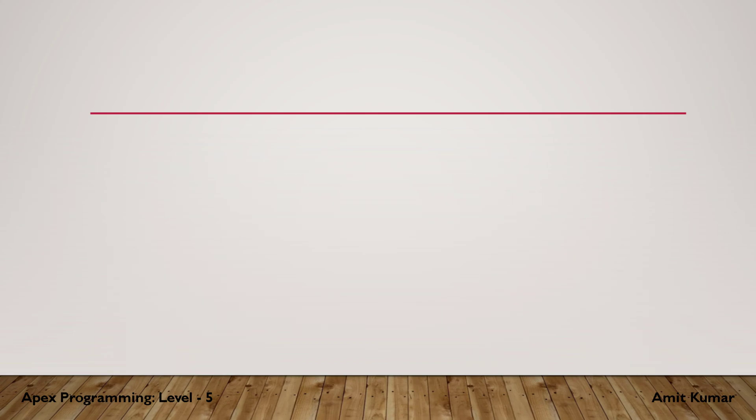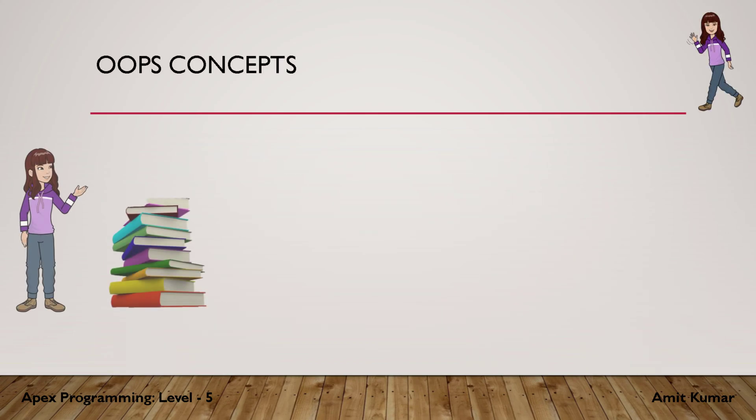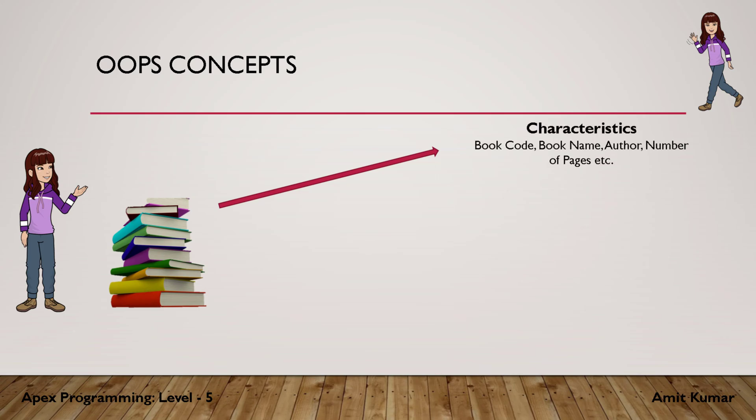Let's focus our discussion on books. Books are objects for a library management system software, and each object will have certain characteristics. So books will also have certain characteristics like book code, book name, author name, number of pages, etc.